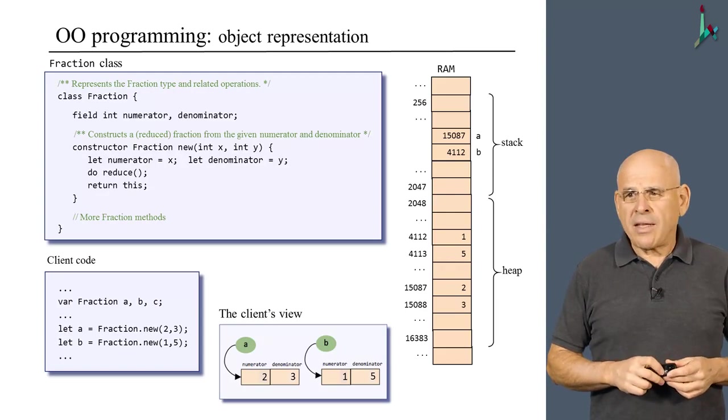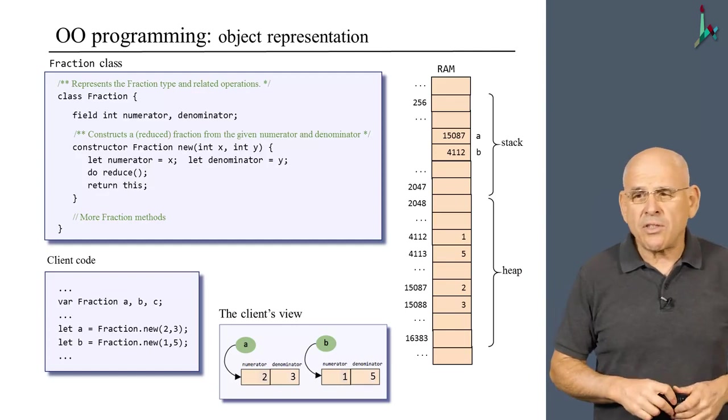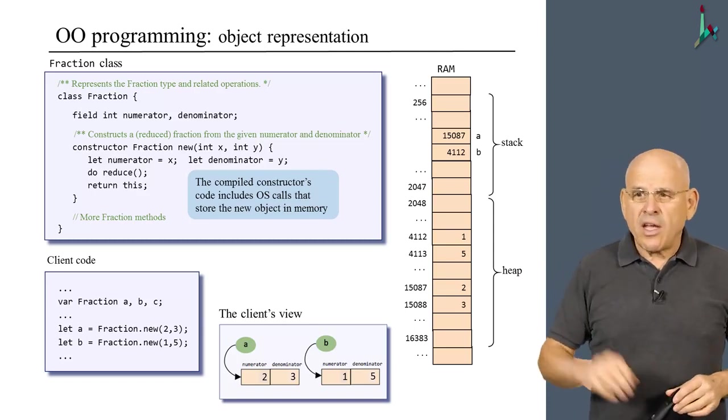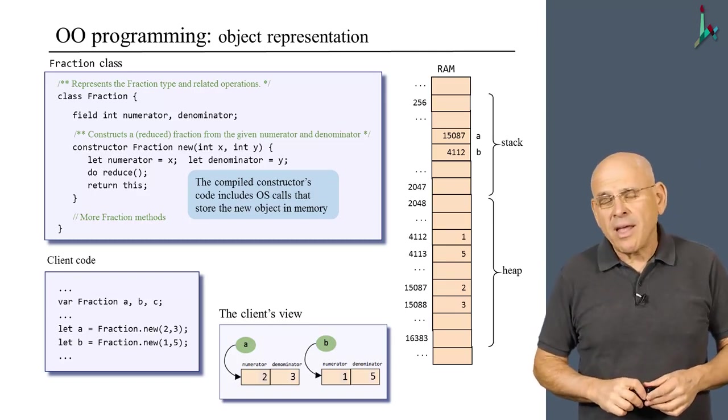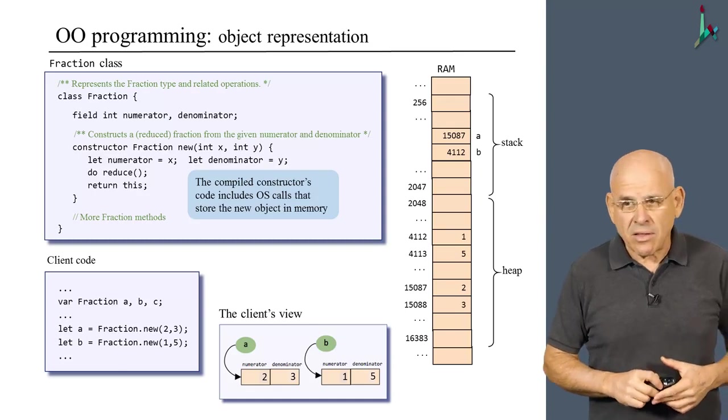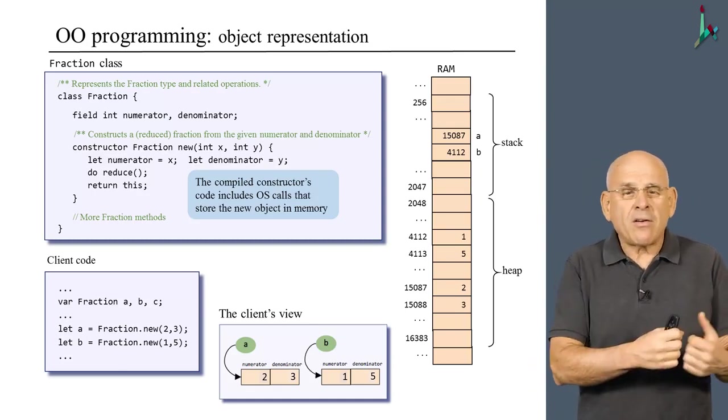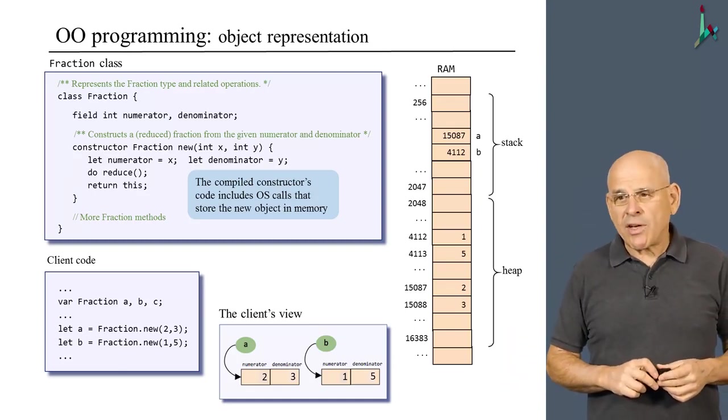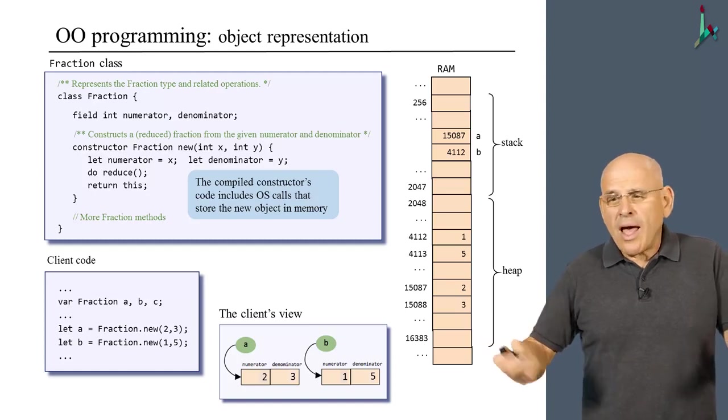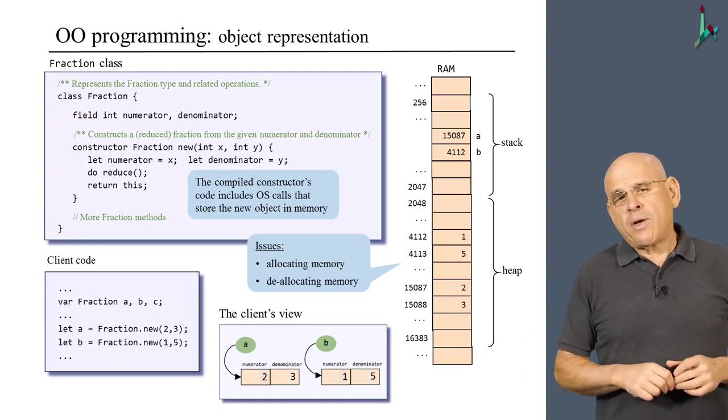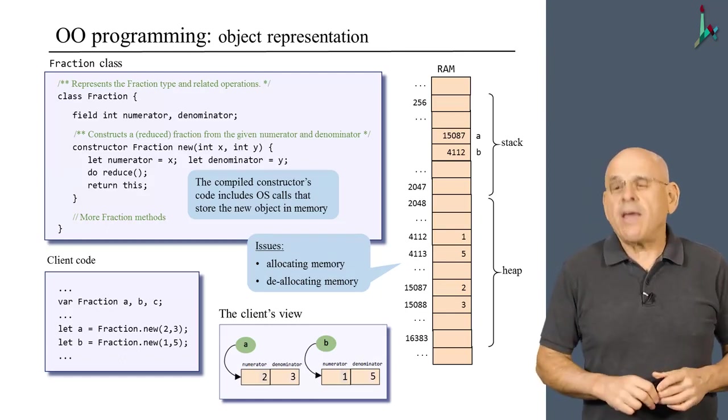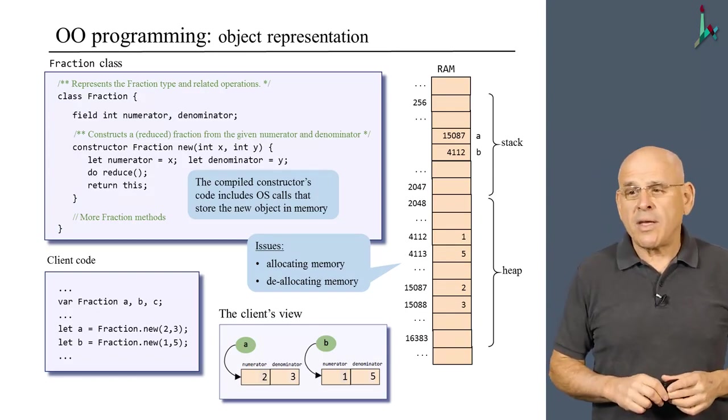Now there's some interesting issues here, and the first one is how does this happen? How is this representation established? Well, the secret is that when the compiler is going to compile your constructor, it will inject some calls to the operating system. And these calls are going to find available memory and allocate it to the object that was just constructed. So as you will see later on in the course, the compiler cooperates with the host OS in order to deliver this functionality that we see here. Which raises some more issues like, well, how do we know, how does the OS know how to allocate memory? How does the OS know how to de-allocate memory when it is no longer necessary? Well, these are high questions, and we'll deal with them in the most elegant and satisfying way later on in the course, so stay tuned until we get to discuss them.